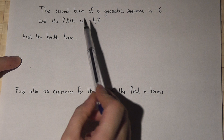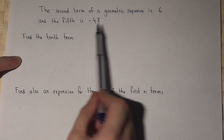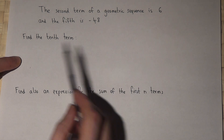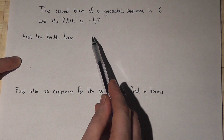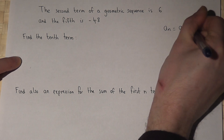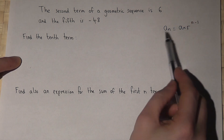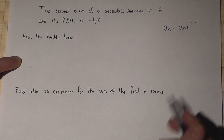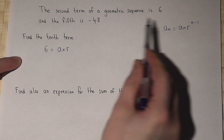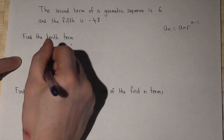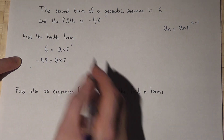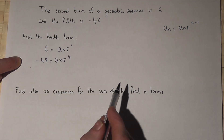In this question, the second term of a geometric sequence is 6 and the fifth term is minus 48. We're asked to find the 10th term. To find the 10th term we will find the first term and the ratio. We know that aₙ equals a times r to the power of n minus 1 is the general formula for the nth term. So the second term gives us 6 equals a times r to the power of 1, and minus 48 equals a times r to the power of 4. These are my two equations.